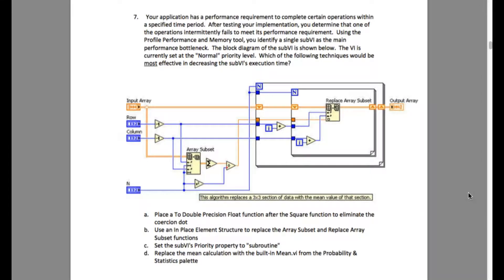So the problem has to do with the priority level. As you can see, the requirement above says that the VI is currently set at the normal priority level.